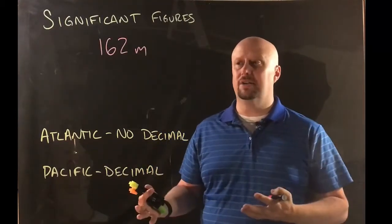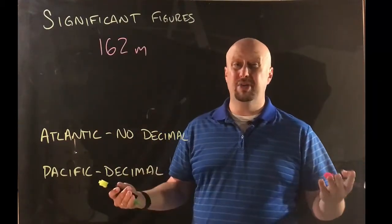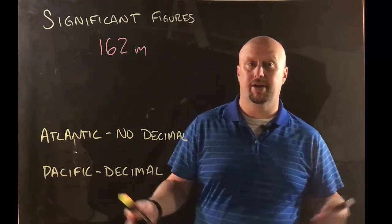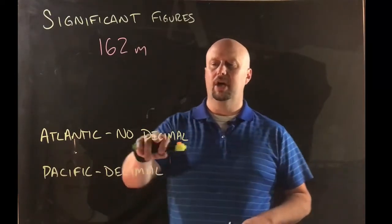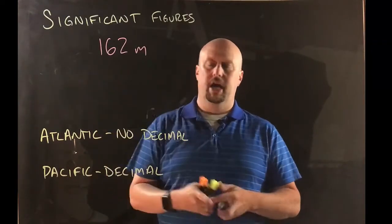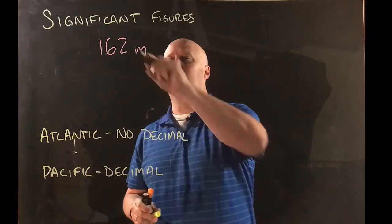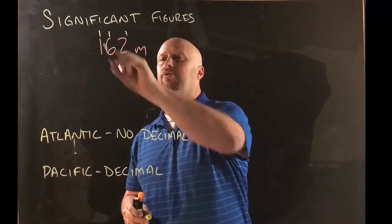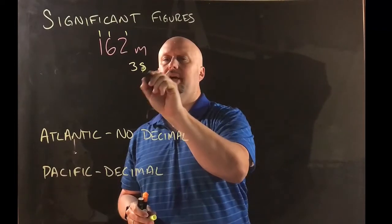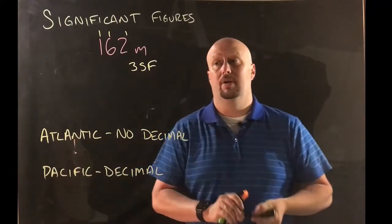So let's see what that means. We got 162 meters. No decimal given in the number. In this one it doesn't really matter anyway but there's no decimal given in the number. So I'm gonna start on the Atlantic side and we're gonna count. So we're gonna count one, two, three. That means there are three significant figures.